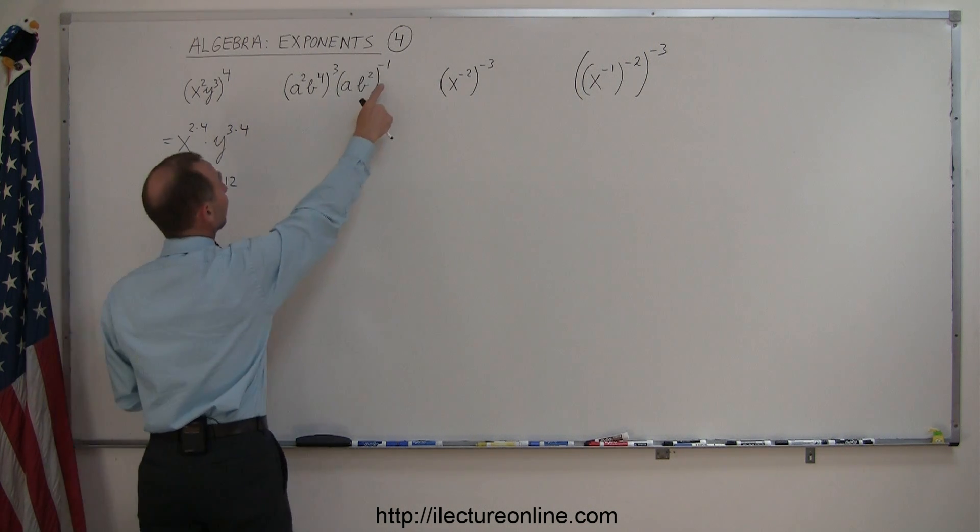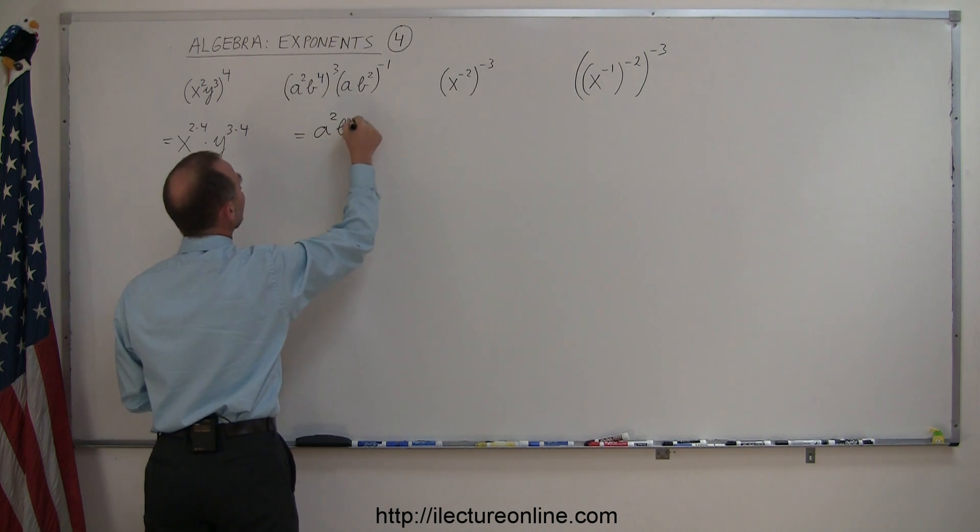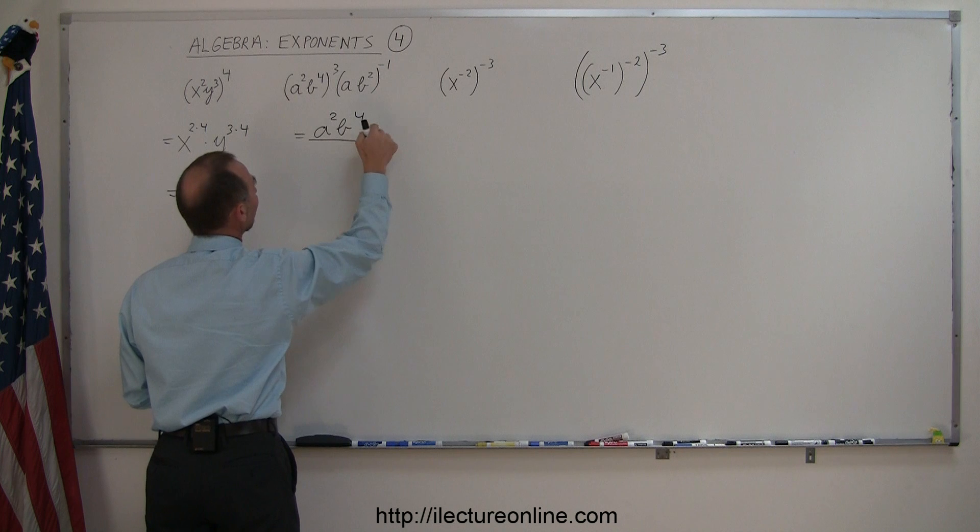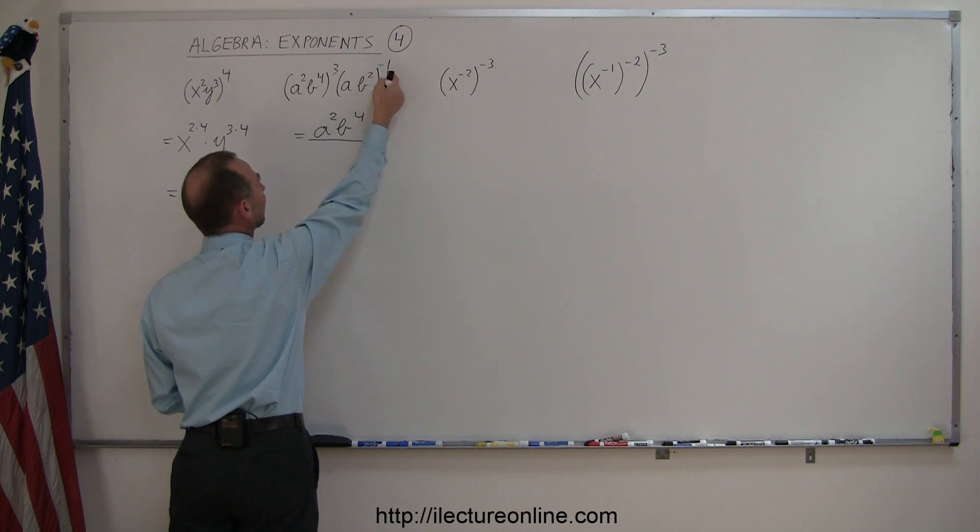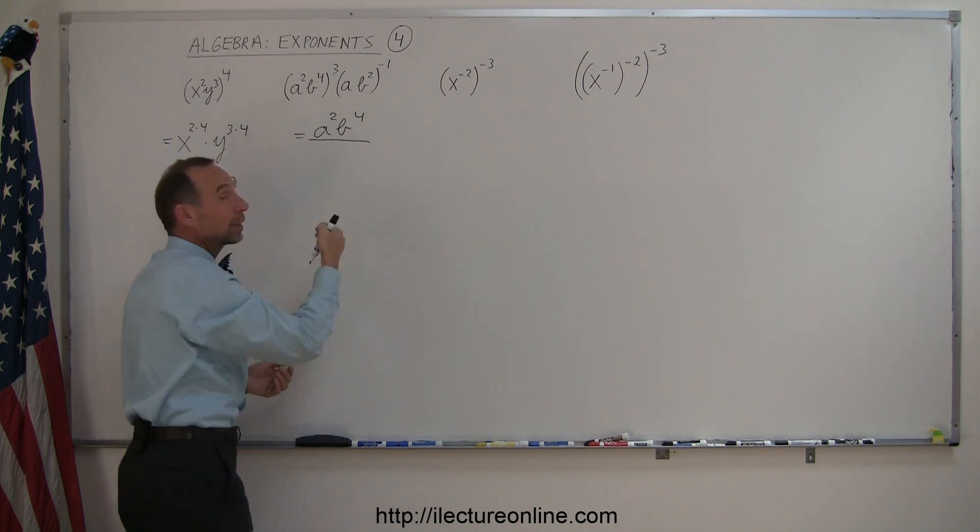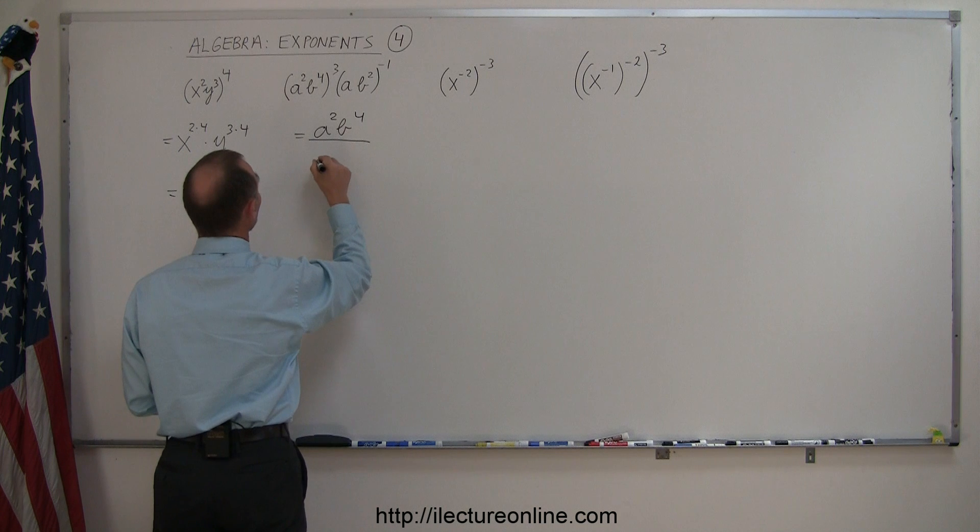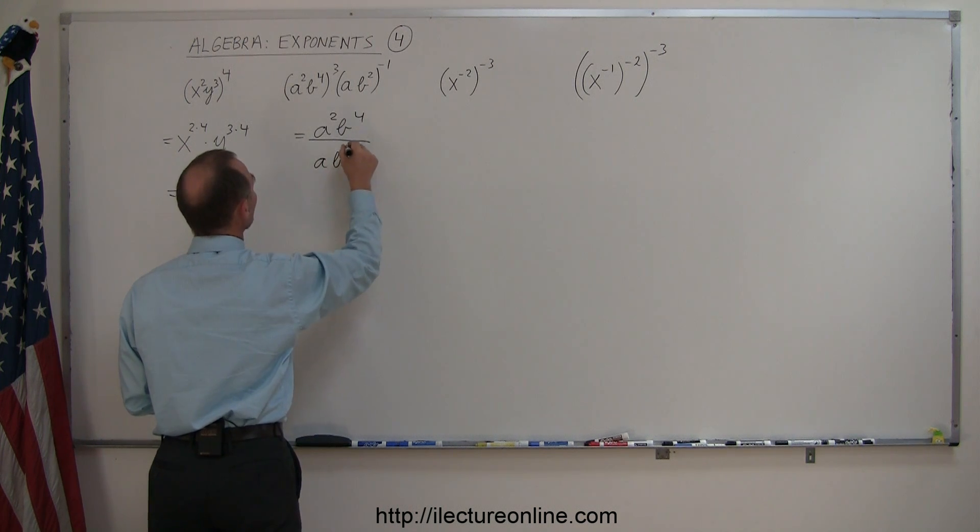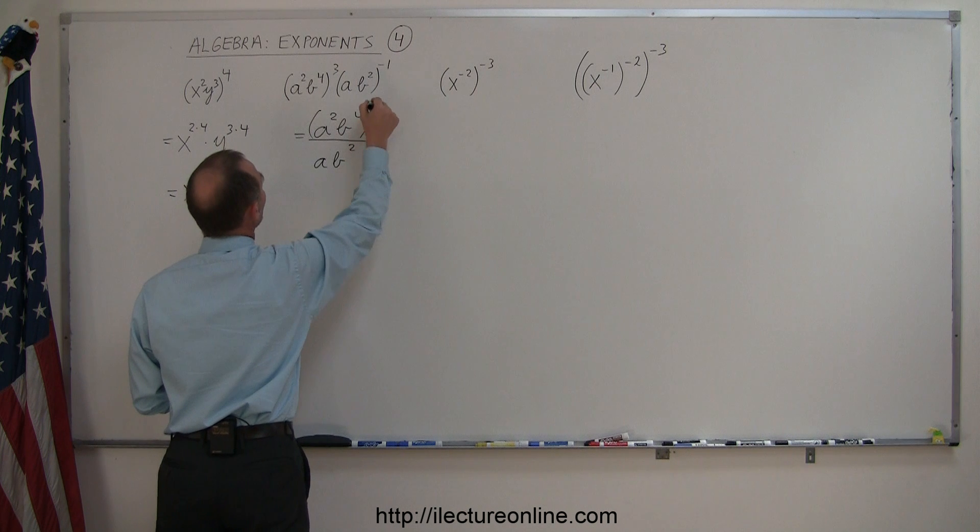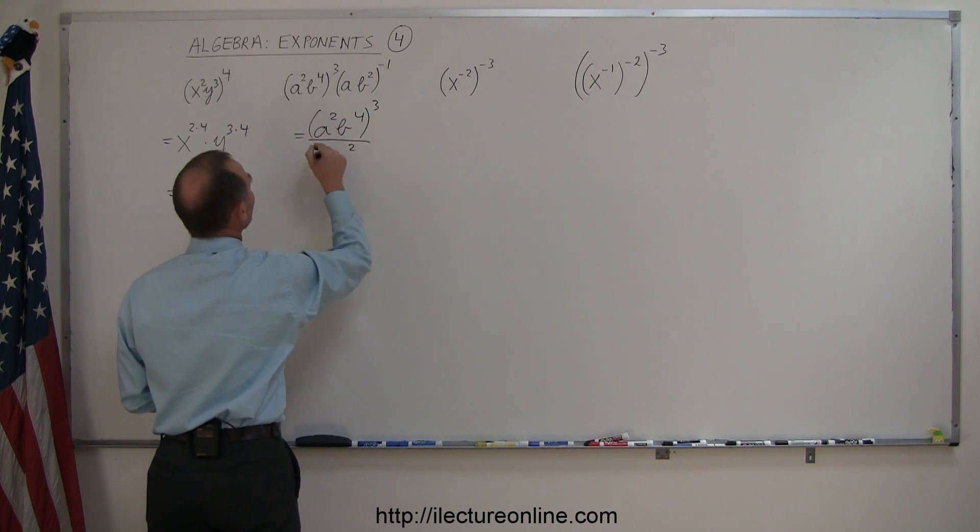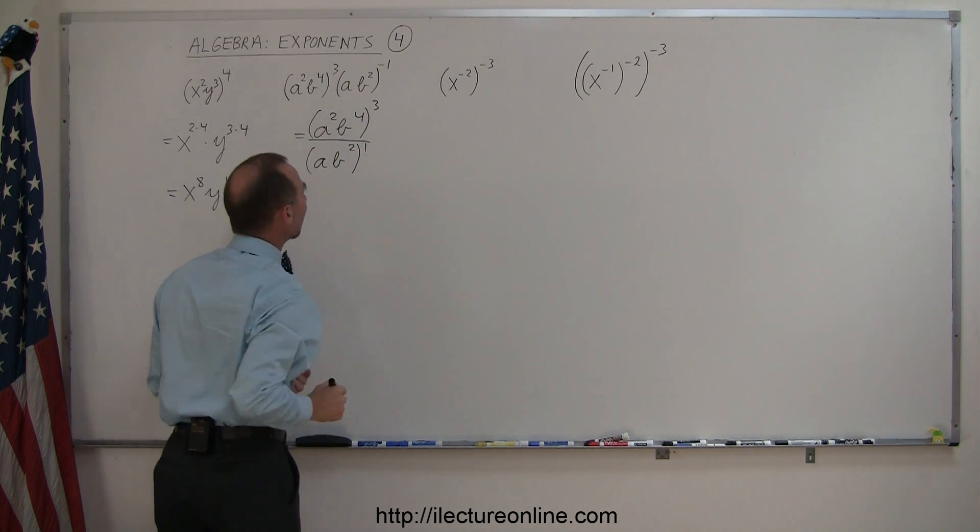Next example. Notice we have a negative exponent here. So what we're going to do first is we're going to write this as a squared b to the 4th divided by - because when I apply the negative sign I can write that as a positive exponent and bring it to the denominator. So this becomes then a b squared. I'm forgetting my, of course, to the cube power here, but bringing this down, this becomes to the positive 1 power.